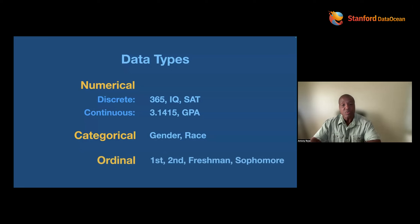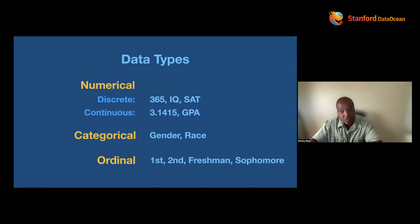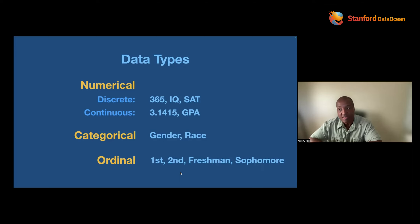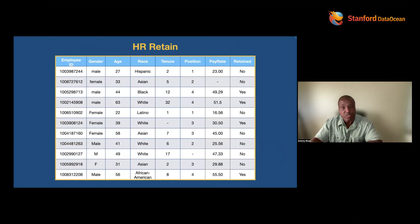If it's categorical, the machine doesn't understand it — that's going to be your task. The machine also wants to know if there's some order to what a column is telling it about the world. These are ordinal values — numbers but not the same numbers we apply math to — like first, second, third place; four-star or five-star restaurant; freshman, sophomore, junior, senior. If there's some order, tell the machine that.